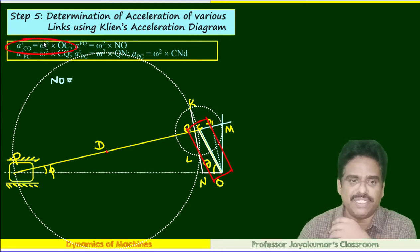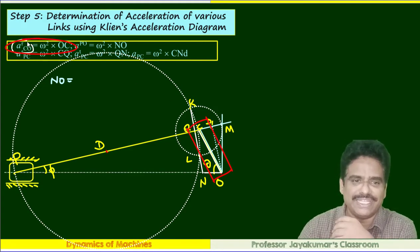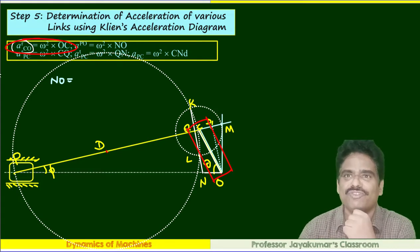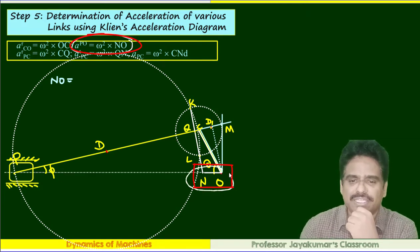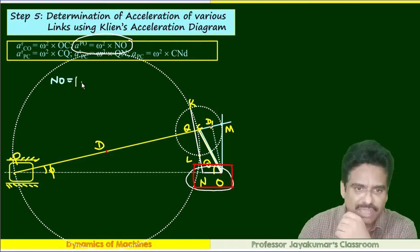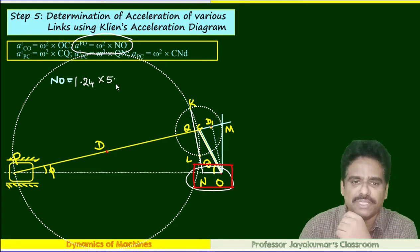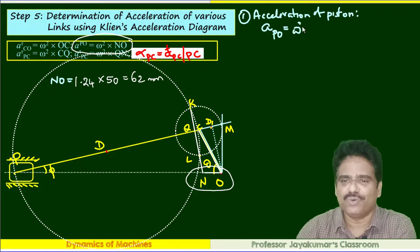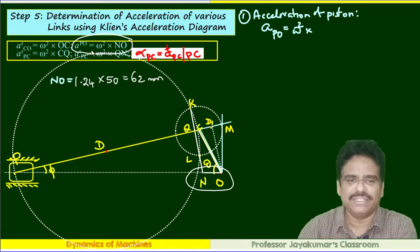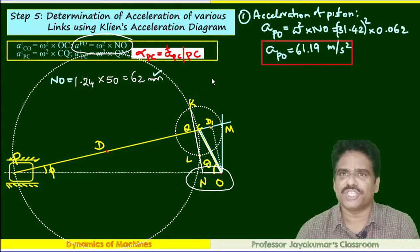From Klein's acceleration diagram: measuring OC multiplied by omega squared gives the radial component of acceleration of the crank. To find acceleration of the piston, we find omega squared multiplied by NO. Measuring NO, I get approximately 1.24 centimeters, which multiplied by the scale gives about 62 mm. The acceleration of the piston equals omega squared multiplied by NO.